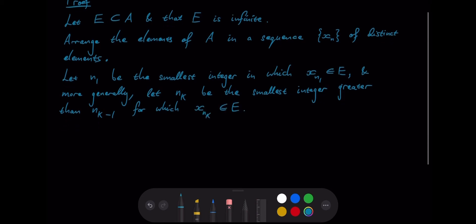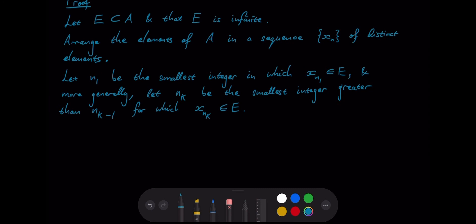Okay, and now if we define the function f of k as being equal to x nk for integers k equals to 1, 2, 3, and so on, then obviously we have a one-to-one correspondence between the set e and the positive integers.